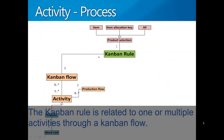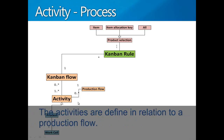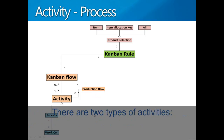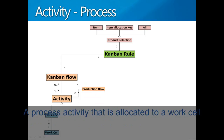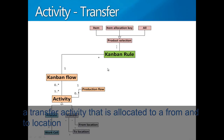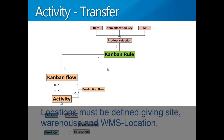The Kanban rule is related to one or multiple activities through a Kanban flow. The activities are defined in relation to a production flow. There are two types of activities: a process activity that is allocated to a work cell, and a transfer activity that is allocated to a from and a to location. Locations can be drilled down into site, warehouse, and WMS location.